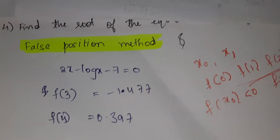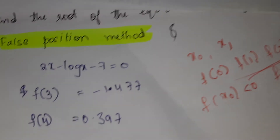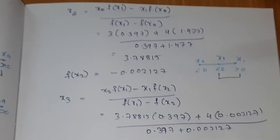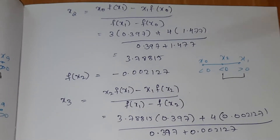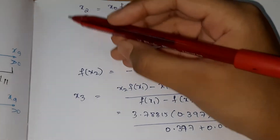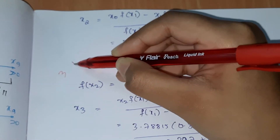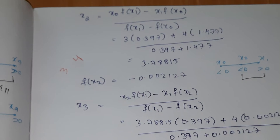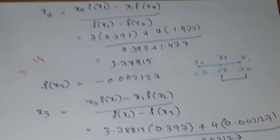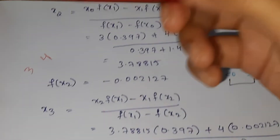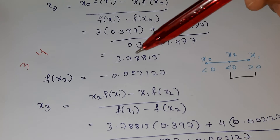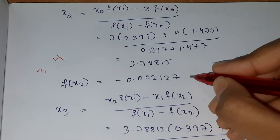Now let's substitute in the formula. Our x0 = 3 and x1 = 4. We found f(x0) and f(x1), and we substitute all the values to find x2. Now that we have x2, we find f(x2) to determine its sign.